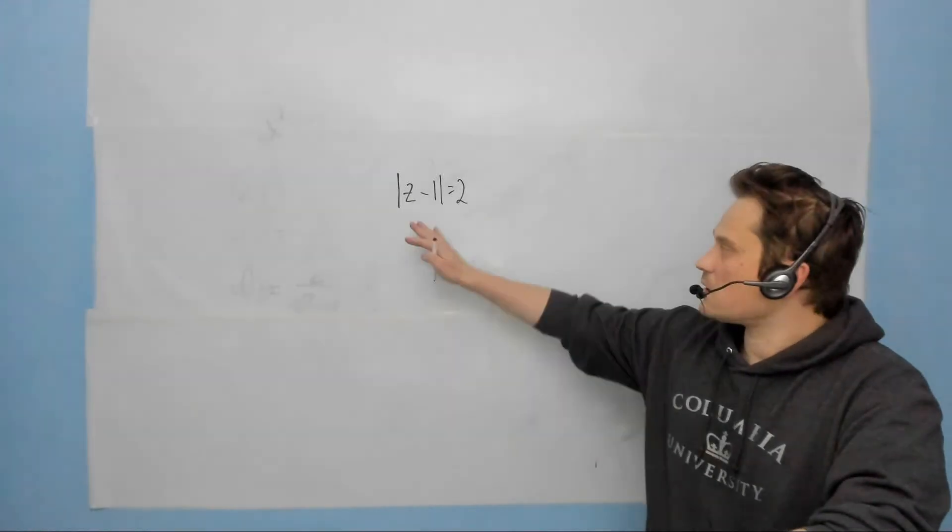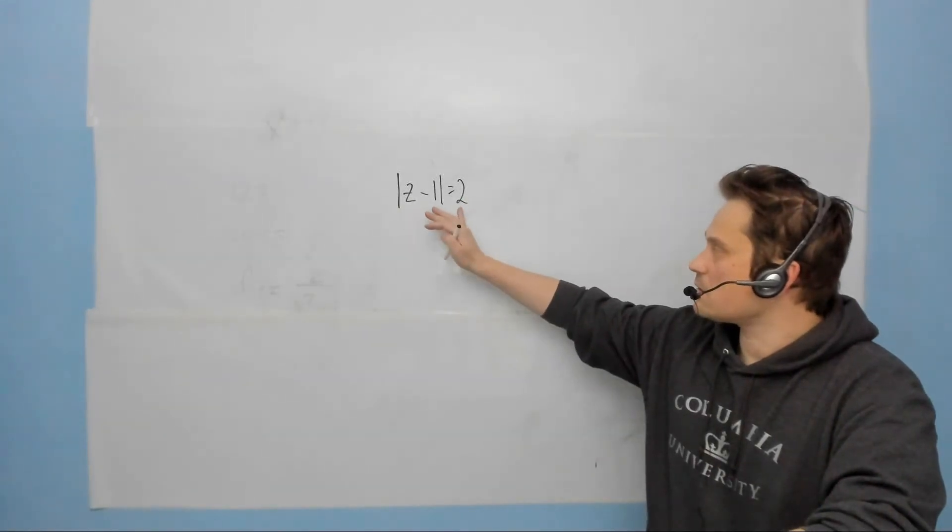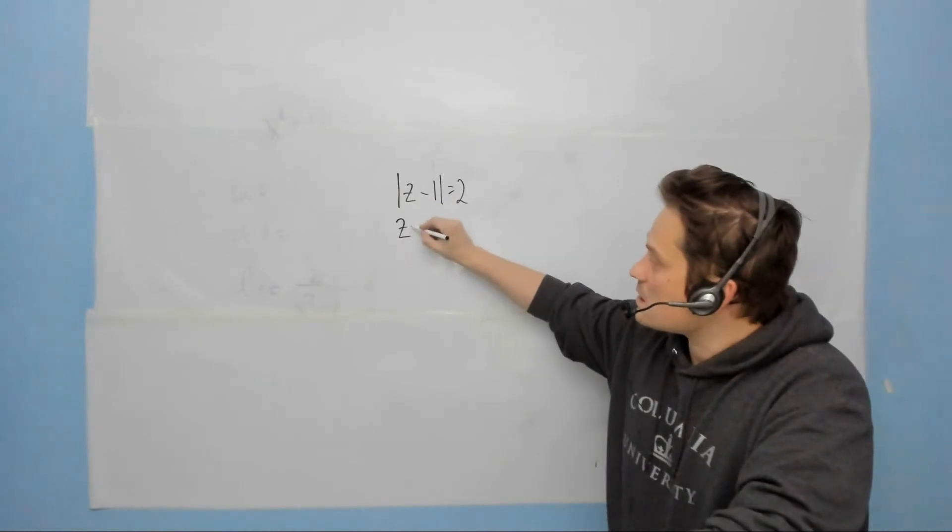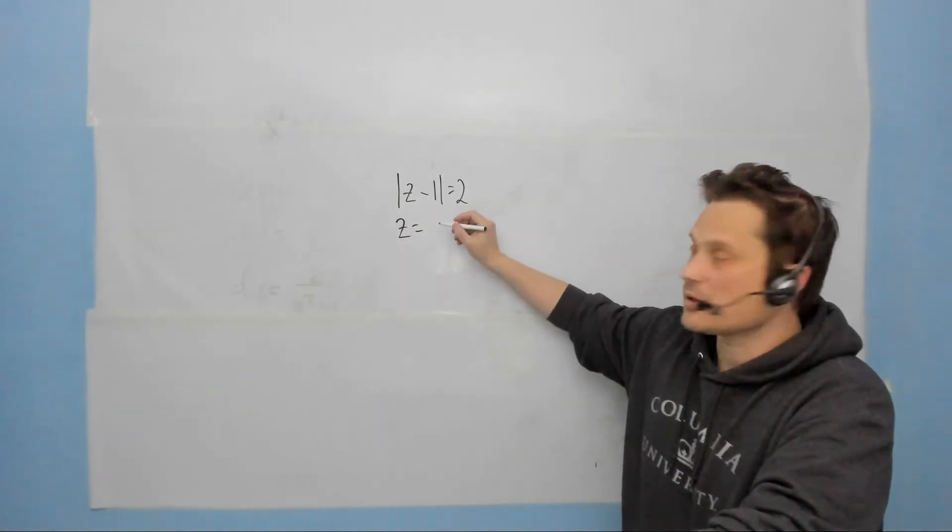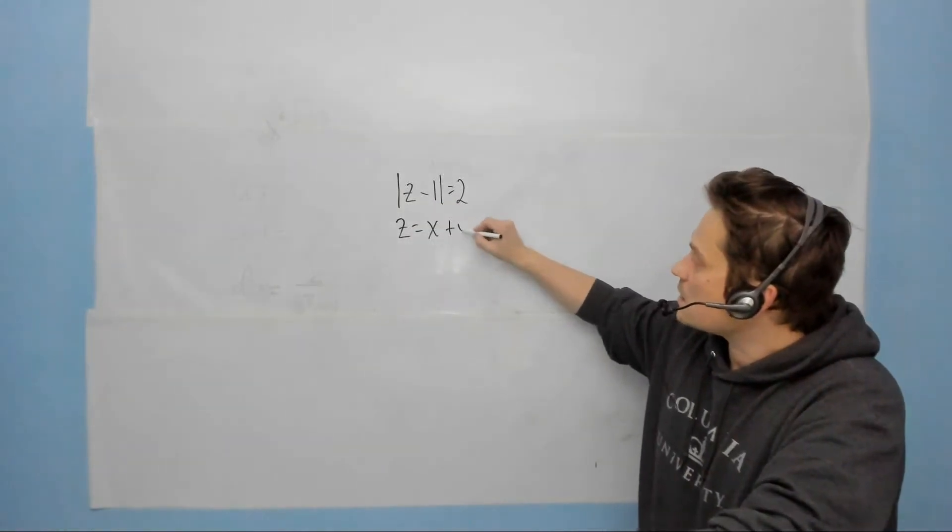Welcome. I'm going to show you how to make a picture of the absolute value of z minus 1 equals 2, where z is in the context as follows, a complex number, so it looks like x plus yi.